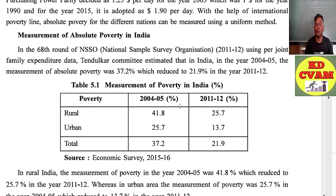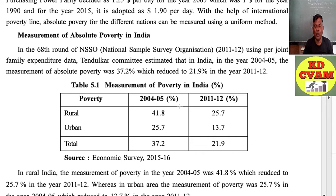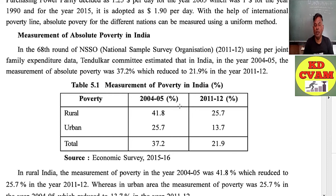Regarding the measurement of absolute poverty in India: in the 68th round of NSSO (National Sample Survey Organization) 2011-12, using per household family expenditure data, the Tendulkar Committee estimated that in India, in the year 2004-05, the incidence of absolute poverty was 37.2%, which reduced to 21.9% in the year 2011-12.